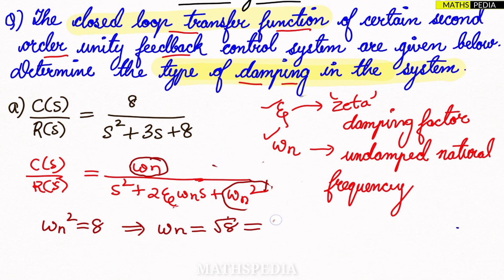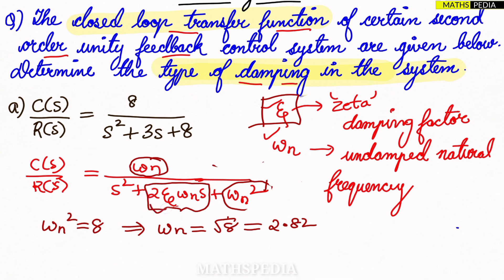From the comparison, omega_n² equals 8, so omega_n equals √8, which is approximately 2.82. Next, to find the zeta value, we compare the coefficient of the s-term. Here the s-term in the standard form is 2ζω_n·s, and we compare it with the s-term in the given question.